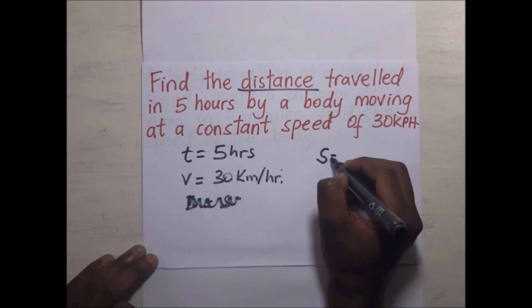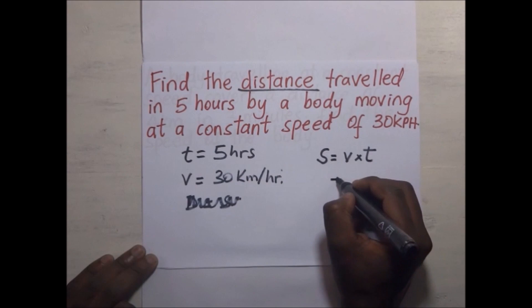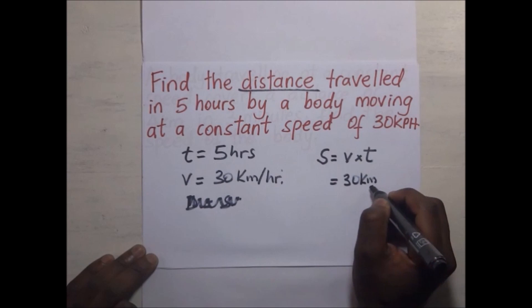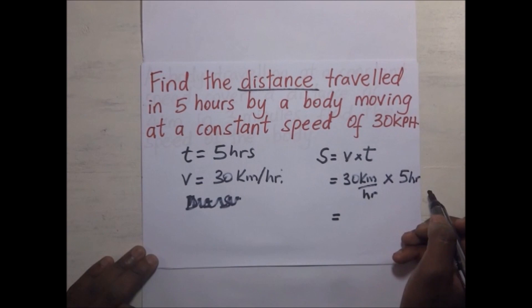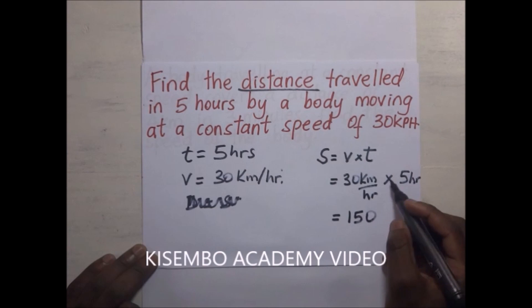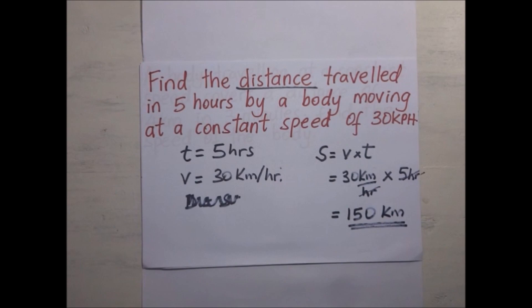Distance S equals speed V times time. So S equals 30 kilometers per hour multiplied by 5 hours. That gives us 150 kilometers — the hours cancel, leaving kilometers. So the distance traveled is 150 kilometers.